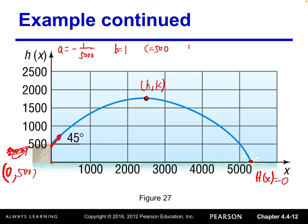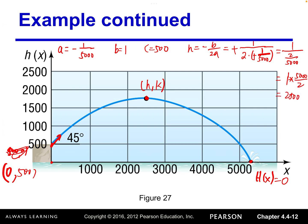We're looking for the vertex, denoted as (h, k). The x-coordinate h equals negative b over 2a. Plugging in: the numerator is 1, the denominator is 2 times negative one over five thousand. The two negatives cancel to give a positive. Dividing by two-over-five-thousand is equivalent to multiplying by five thousand over two, giving us h equals 2500.